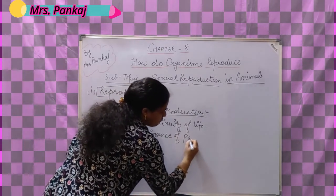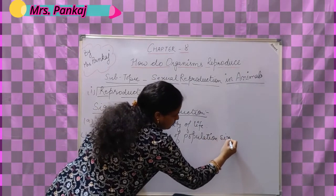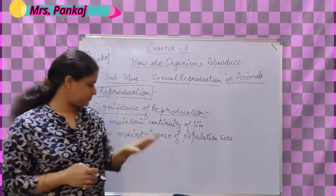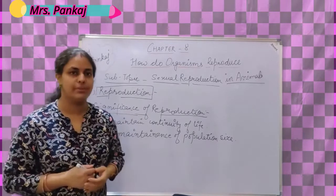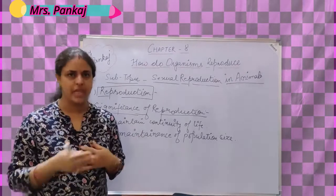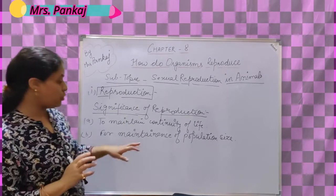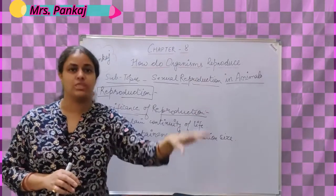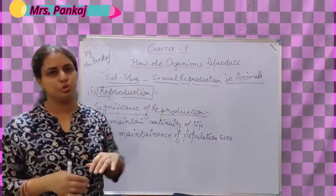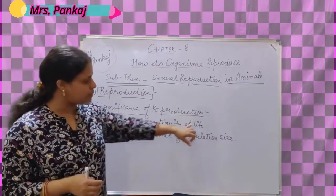The second significance is for maintenance of population size. To understand this, let's take an example: we know we are all mortal, that means after a certain age or after a certain period of time death will occur. So if the previous place of an individual is not being replaced by the new generation, the population size will decrease and that will again come to an end.